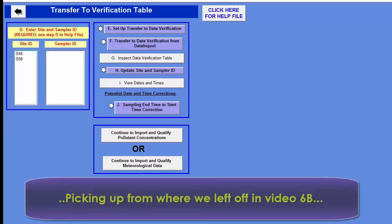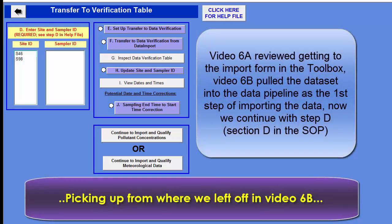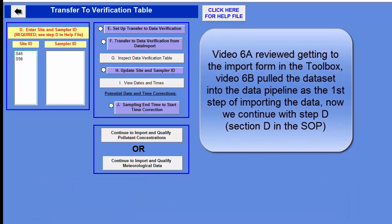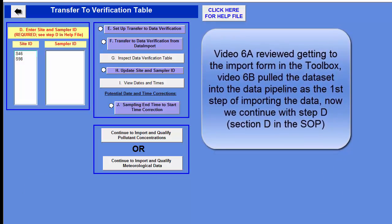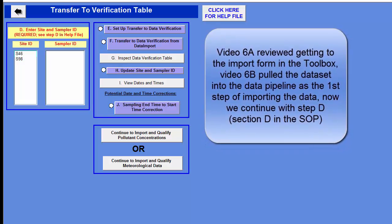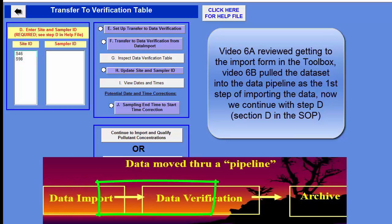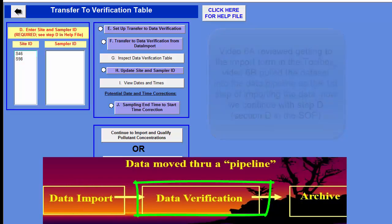We have completed the first form in the series, which was importing our data into the data import table. Now we're in the next form and we're going to transfer our ozone data from the import table into the verification table. The verification table is the middle table in the series — it's between the import table and the archive table.